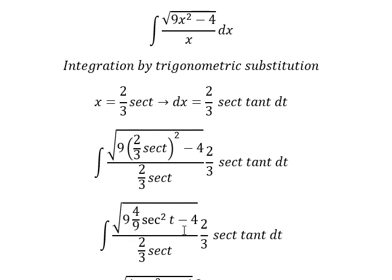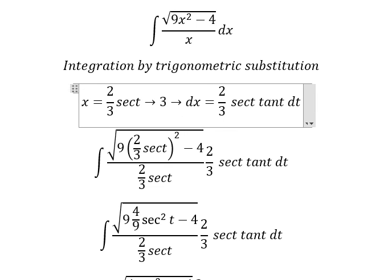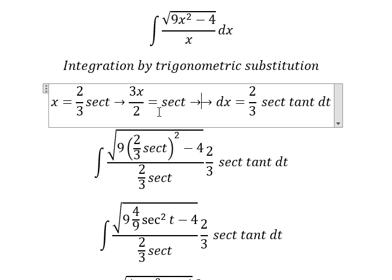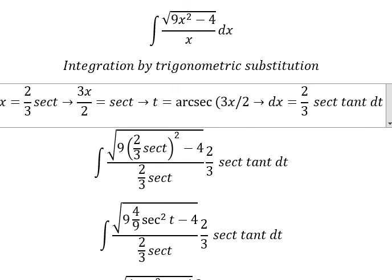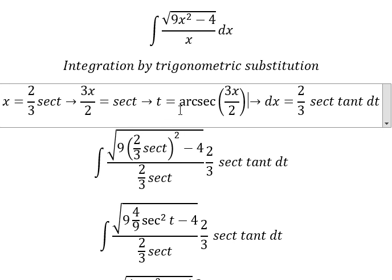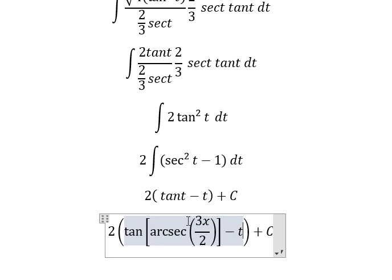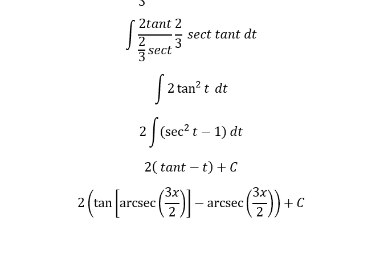For t, we divide both sides by 2 over 3, giving 3x over 2 equals secant t, so t equals arcsecant of 3x over 2. We substitute this back in to replace t and get our final answer. This is the end — thank you for watching.